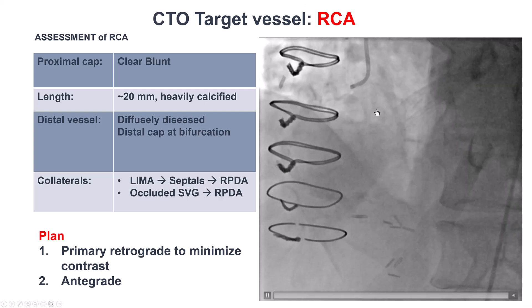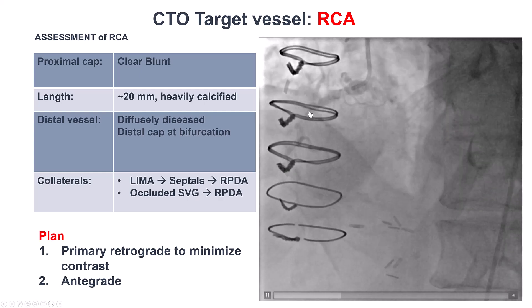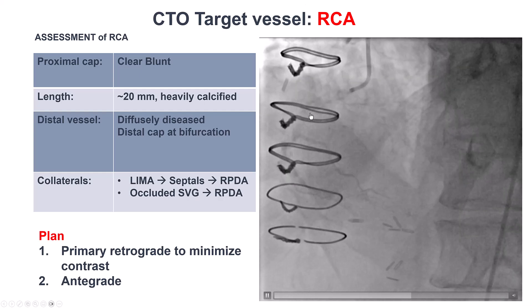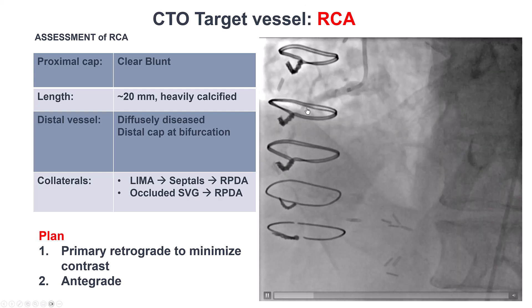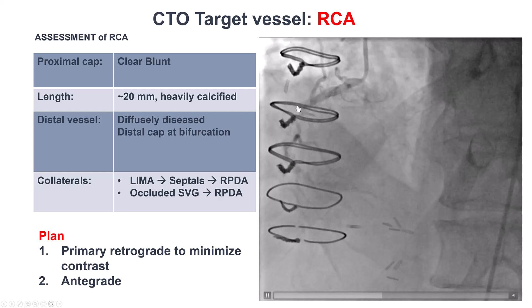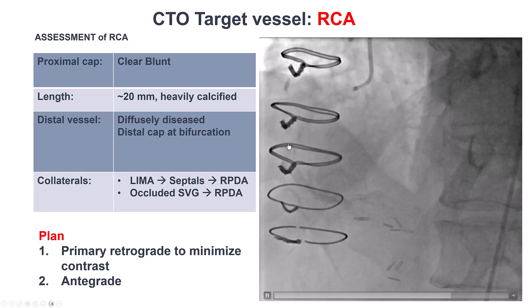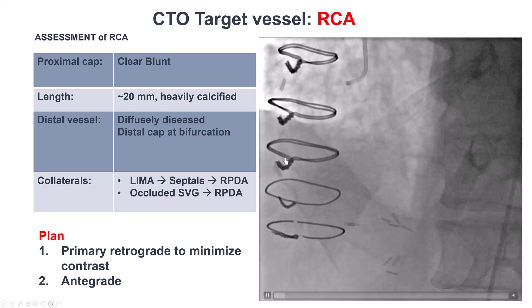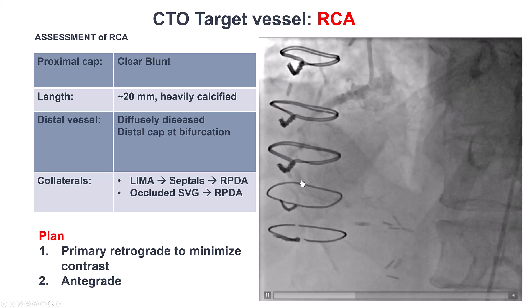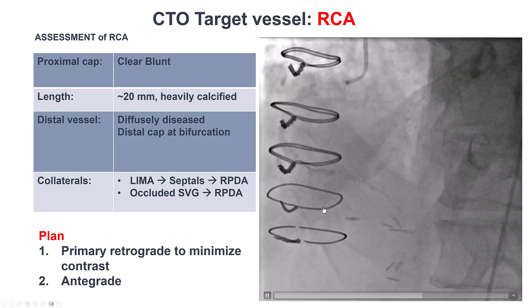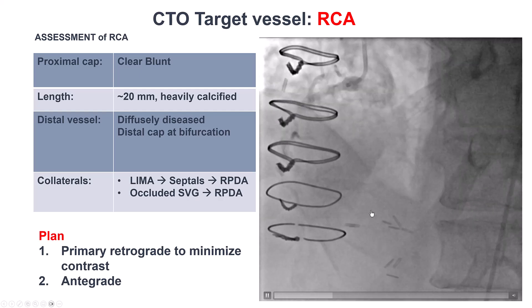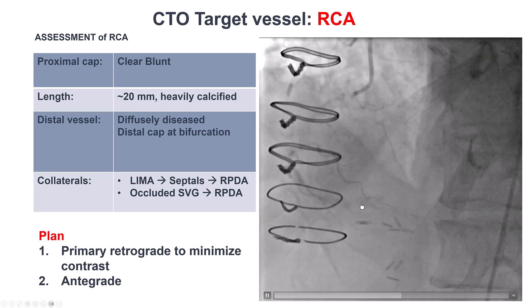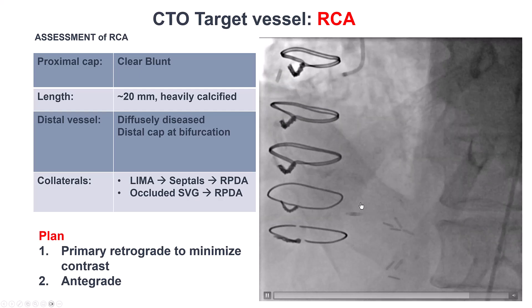The RCA has a clear cap, although it is a little blunt. There is heavy calcification. The occlusion is about 20 millimeters. The distal vessel is diffusely diseased, and there is a PDA-PLV bifurcation at the distal cap.